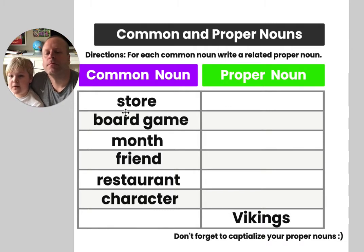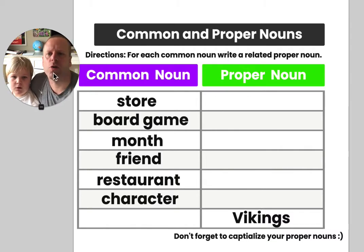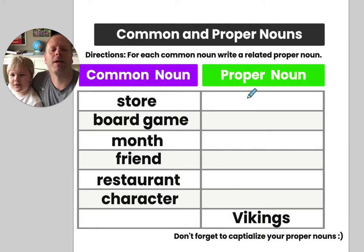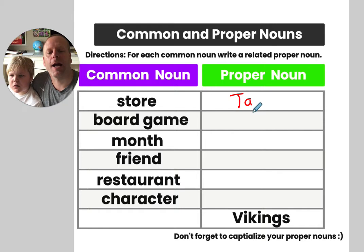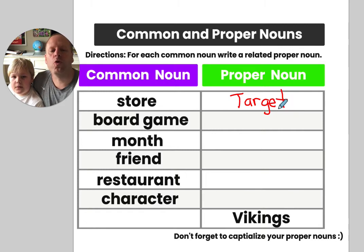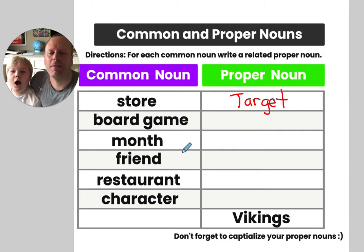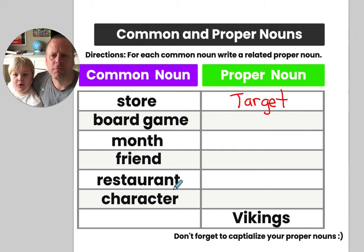You need to come up with the store's name and capitalize a store that you go to. What is a store that we sometimes go to? We go to Target. I'm going to write down Target, and we're going to capitalize it. Board games — one of those games you play as a family, maybe like Uno. Month — what's your favorite month? My favorite month is December. That would be the name of a month.